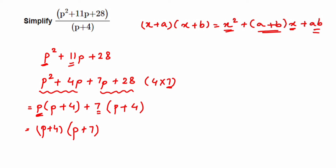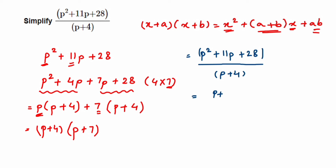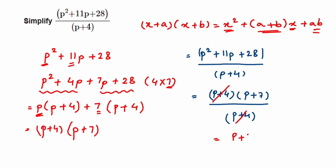Now substituting back into the original question: (p² + 11p + 28) / (p + 4) becomes (p + 4)(p + 7) / (p + 4). Since (p + 4) appears in both numerator and denominator, we cancel them. The answer is p + 7.